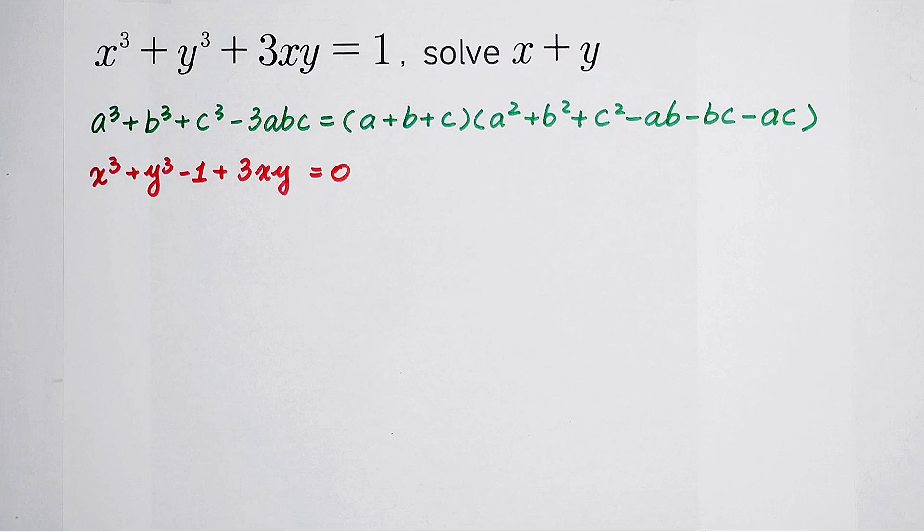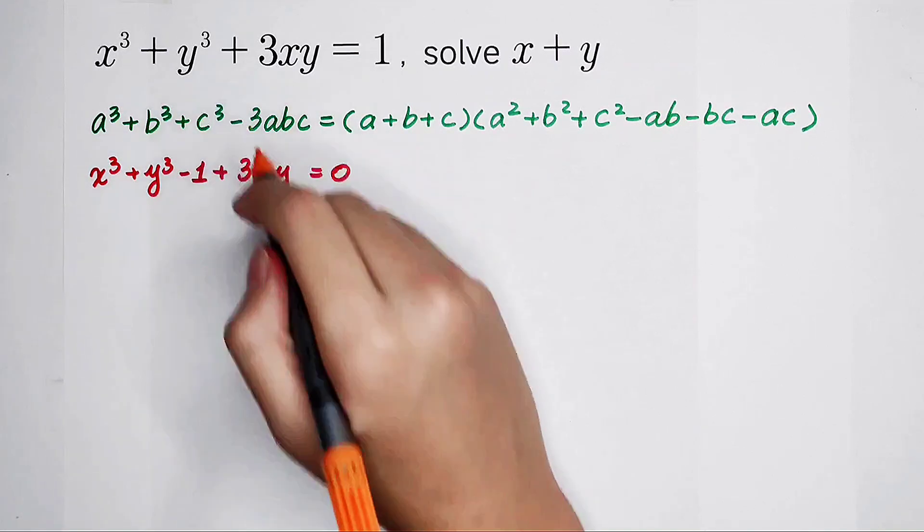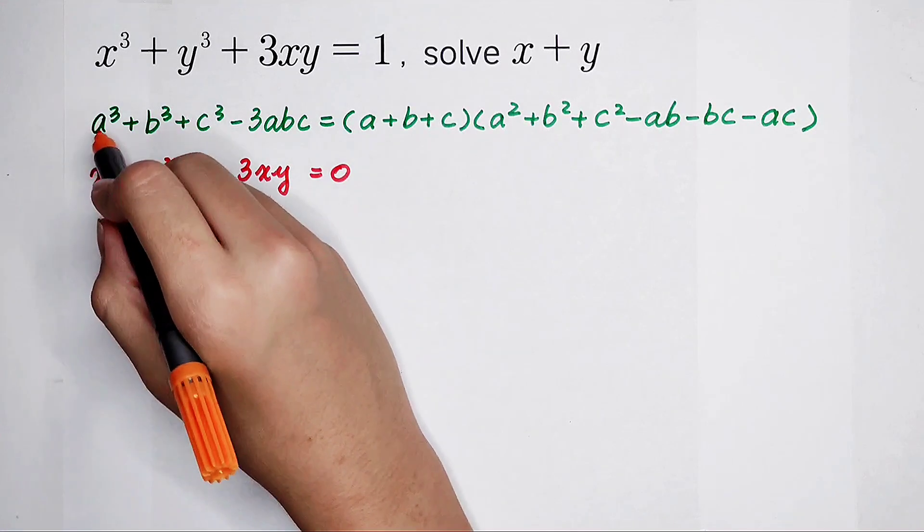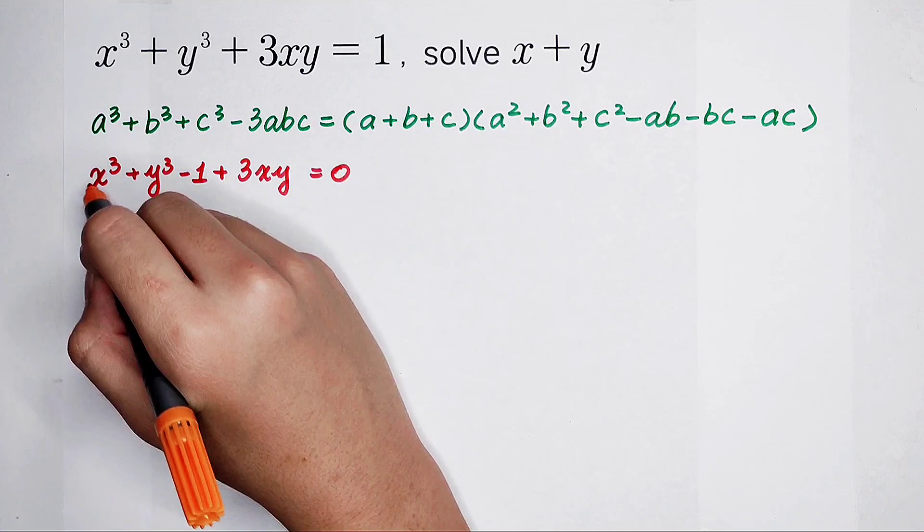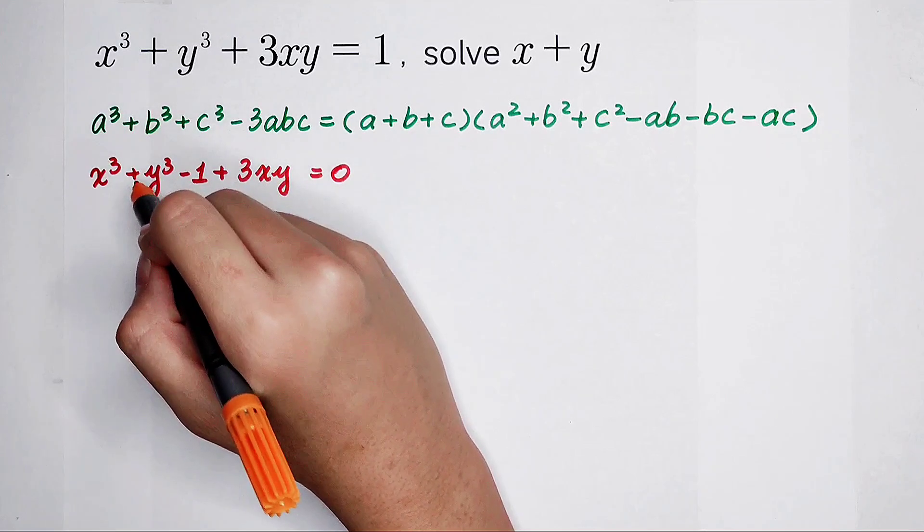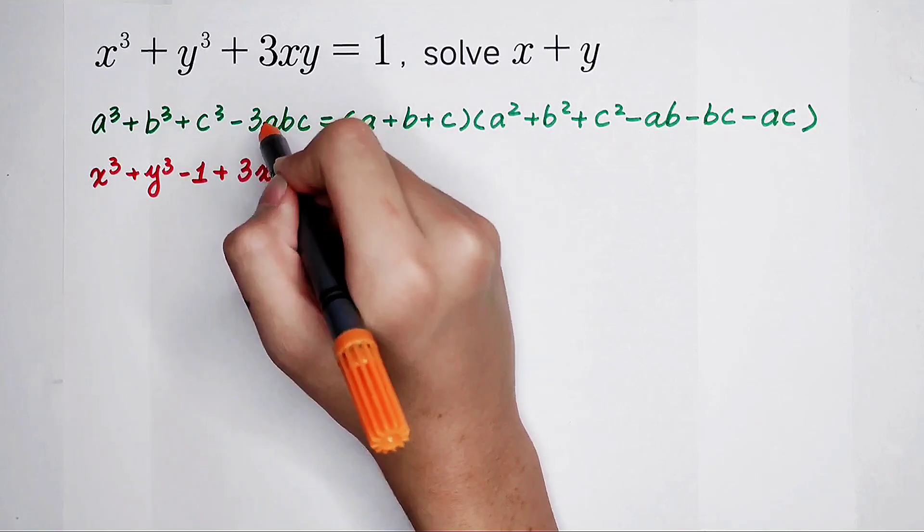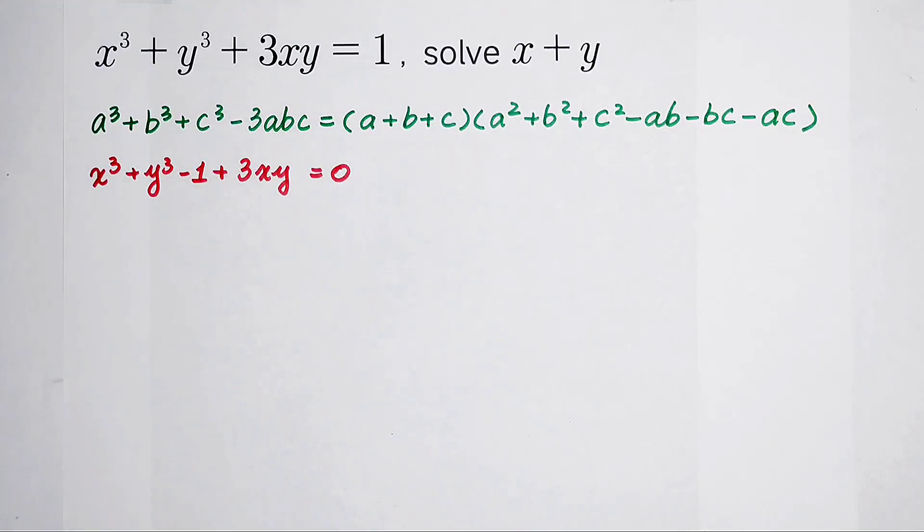x cubed plus y cubed minus 1 plus 3xy equals 0. You see, what's the difference between these two formulas? Of course, left hand side. A cubed, x cubed. Positive b cubed, positive y cubed. Positive c cubed, negative 1. Minus 3abc, plus 3xy.